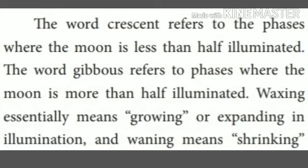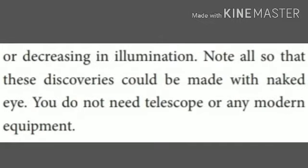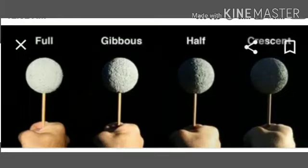Waxing essentially means growing or expanding in illumination, and waning means shrinking or decreasing in illumination. Note also that these discoveries could be made with the naked eye — you do not need a telescope or any modern equipment.